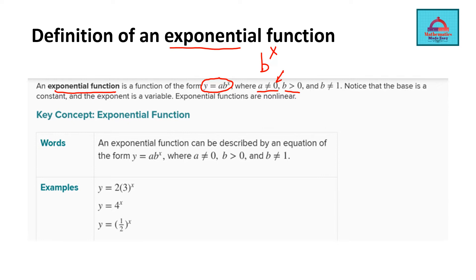Next, b must be positive — strictly greater than 0. If b is 0, there is no function. If b is negative, it becomes a negative exponent, which we are not dealing with here. Another restriction is that b ≠ 1. If b is 1, there is no exponent and the function reduces to y = a, which is just a linear function or a straight line. Remember these three restrictions — they are very important for exponential functions. Also note that b (the base) is a constant and x (the exponent) is a variable.